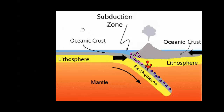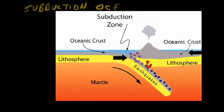The next type is ocean-ocean subduction. You might ask: if both plates are oceanic and both are basalt, how do you know which one will subduct? The one that subducts is the one that traveled the farthest from a ridge, because that one has greater density.